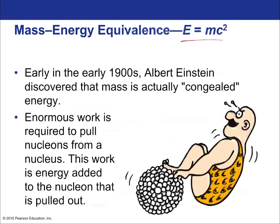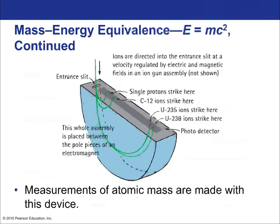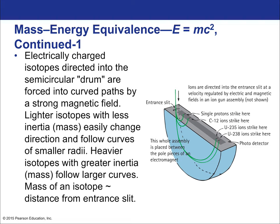Albert Einstein discovered in the early 1900s that mass is congealed energy — E equals mc squared. Enormous work is required to pull nucleons from a nucleus; that work becomes energy added to the extracted nucleon, which is why binding energy effectively represents the extra mass the nucleon has. Atomic masses are measured with a mass spectrometer: electrically charged isotopes directed into a semicircular drum are forced into curved paths by a strong magnetic field, with lighter isotopes taking a smaller radius path and heavier ones a larger radius path.